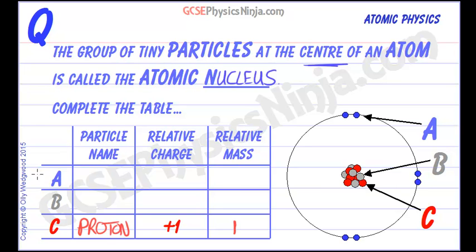The next particle inside the nucleus — that tiny pea at the centre of the football pitch — is the neutron. The neutron was discovered sometime after the proton, and it was found to have a neutral charge, i.e. a relative charge of 0. It has more or less the same mass as a proton, so it has a relative mass of 1.